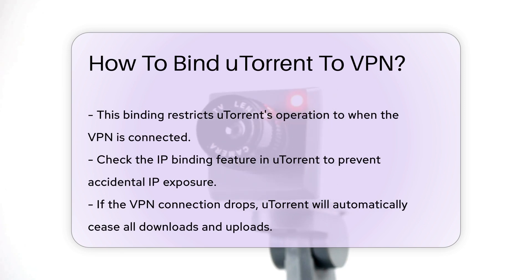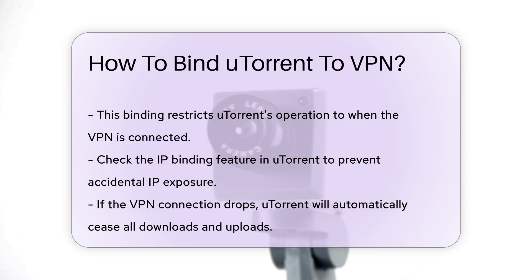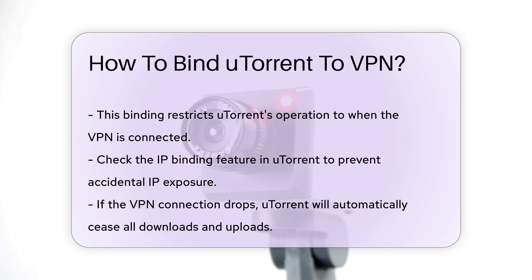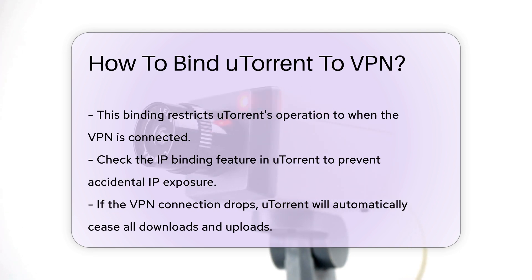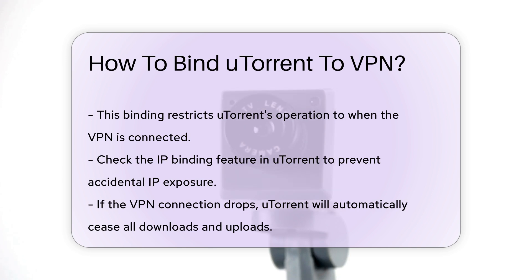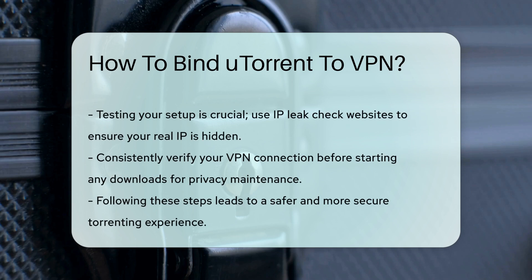You can also check the IP binding feature in uTorrent. This ensures that if the VPN connection drops, uTorrent will automatically stop all downloads and uploads. This feature is vital for preventing any accidental exposure of your real IP address. After configuring these settings, it is advisable to test your setup. You can use websites that check for IP leaks to confirm that your real IP is not visible while torrenting.